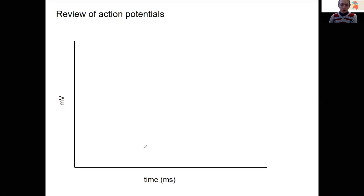We've got a graph of millivolts over time in milliseconds. Action potentials are pretty darn quick.